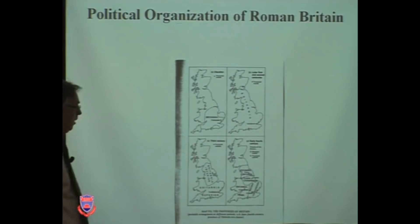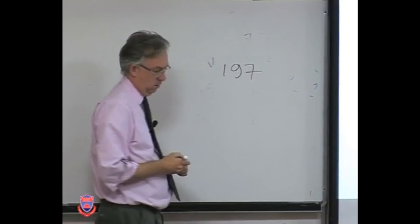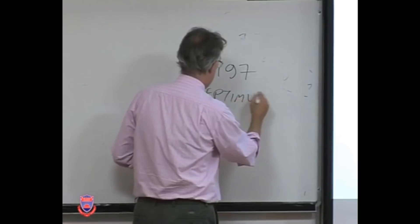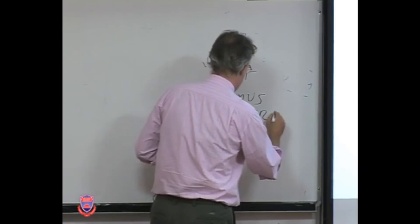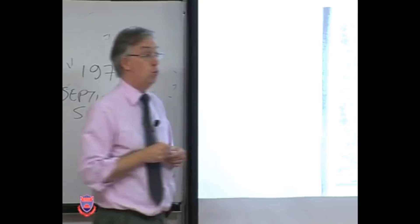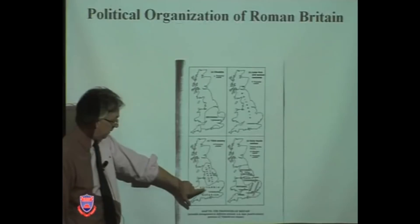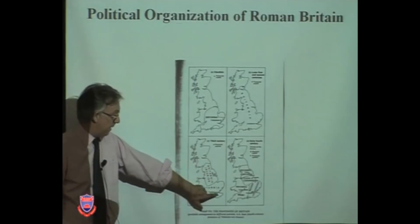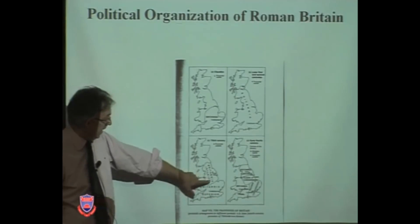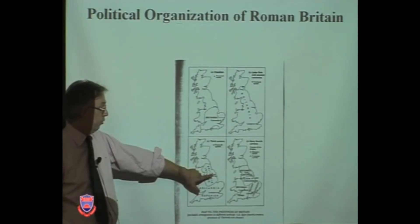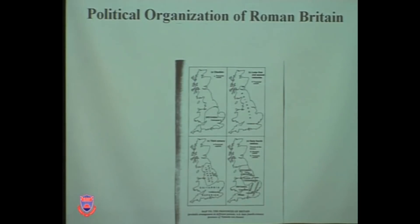In 197, under the Emperor Septimius Severus, it was deemed necessary to divide Britannia into two separate provinces. So now we have in the south Britannia Superior and in the north Britannia Inferior. London remains the capital of Britannia Superior, and Britannia Inferior was governed from York, which had originally been a legionary fortress and now becomes the provincial capital for Britannia Inferior.